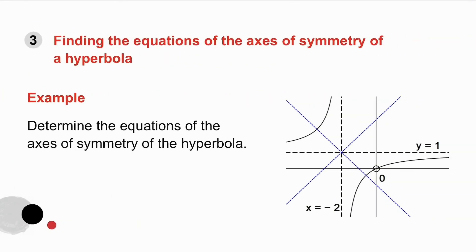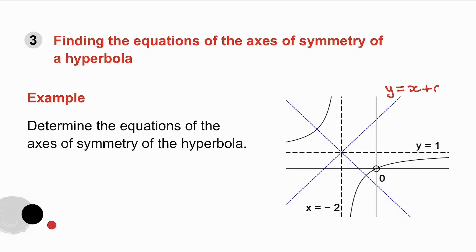The last thing we're going to do is find the equations of the axes of symmetry of a hyperbola. A hyperbola has two axes of symmetry — in this example one does not cut the hyperbola, and the other does. The first has gradient 1 so its equation is y equals x plus c, and the second has gradient minus 1 so its equation is y equals minus x plus c. Both pass through the intersection of the asymptotes. Pause the video and try to find both equations.